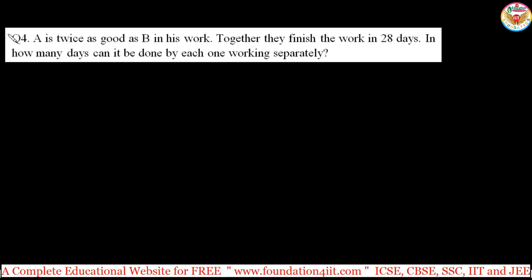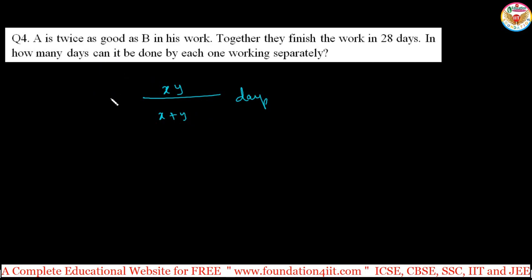Another type: instead of giving values directly, they give a relation. If A is twice as good as B, and together they finish the work in 28 days, in how many days can each finish the work separately? One member's capacity is different. The same formula applies for two members: (x × y) / (x + y) days. But A is twice as good as B — so if B takes 2x days, A can take only x days.